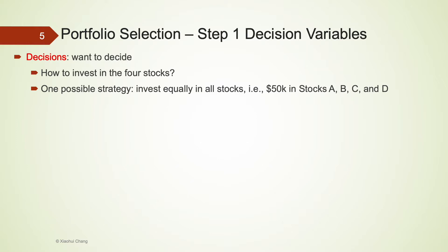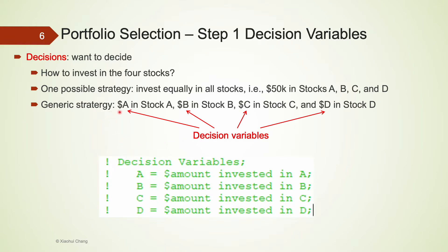Let's work on this problem step by step. First, let's start with defining the decision variables. The management has to decide how to invest in 4 stocks. One trick that helped me identify the decision variables is to come up with one possible strategy — it does not have to be the optimal strategy. One possible strategy here is to invest in all stocks equally, so that's $50,000 in stocks A, B, C, and D. We notice that we use 4 variables A, B, C, and D, which represent the dollar amount invested in each stock. So these 4 variables are indeed our decision variables.